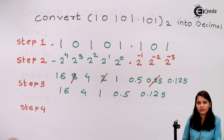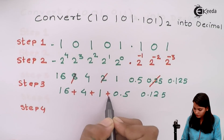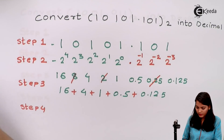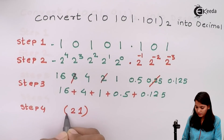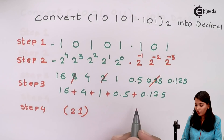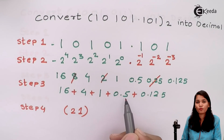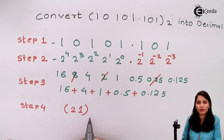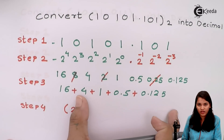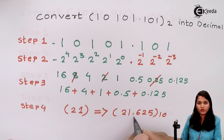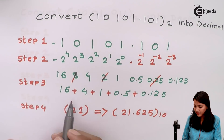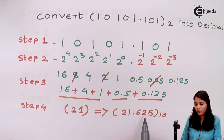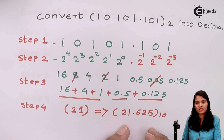The final step is to add the remaining weightages. 16 plus 4 plus 1 plus 0.5 plus 0.125: the whole number part 16 plus 4 plus 1 gives 21, and the fractional part 0.5 plus 0.125 gives 0.625. Therefore the final decimal value is 21.625.